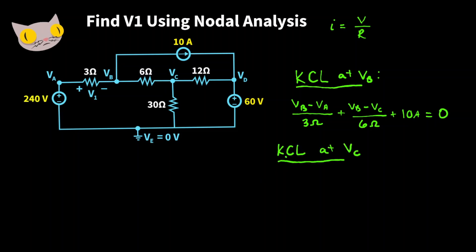Next, let's use KCL at node VC. So that's going to give us VC minus VB over 6 ohms plus VC minus VE over 30 ohms plus VC minus VD over 12 ohms. And that should equal 0.